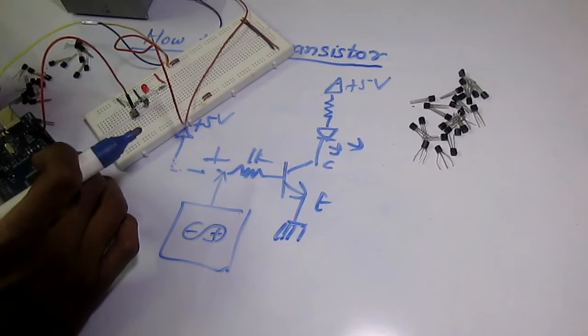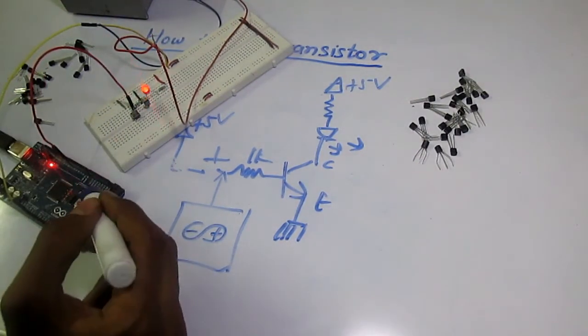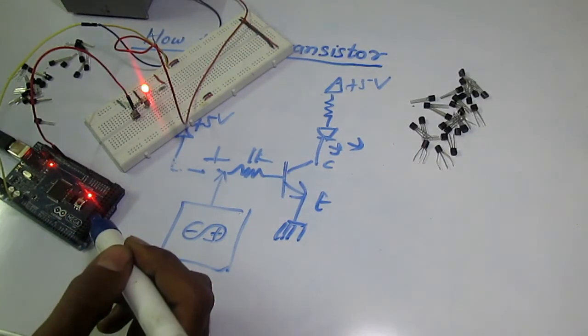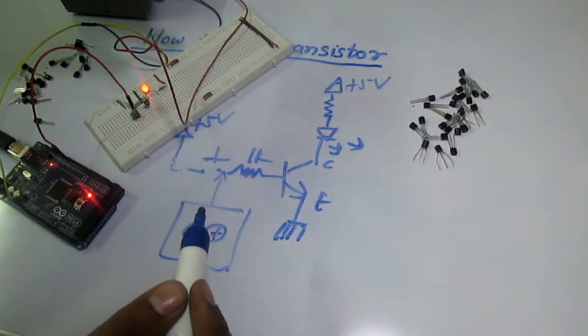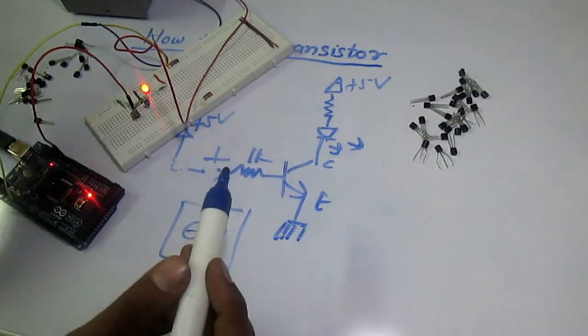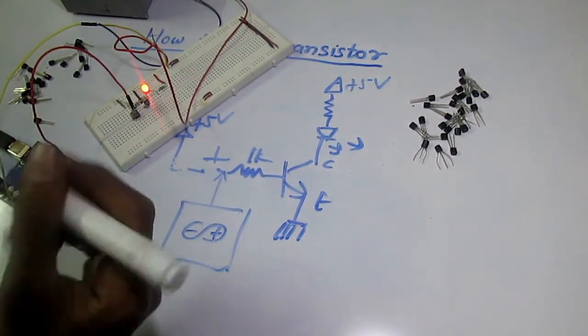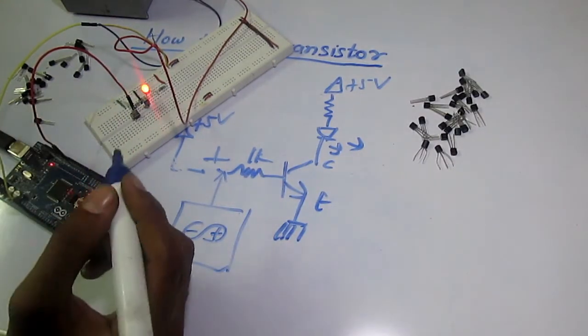Now I plug in the USB jack. I've uploaded a fading program to this Arduino. You can remove this LED and connect a higher power LED, like a one or two watt LED, and it will drive it.